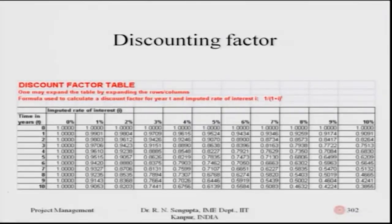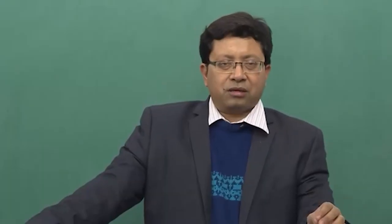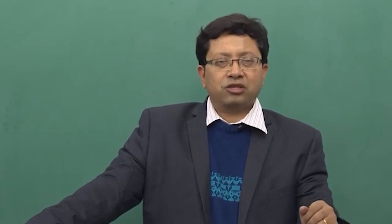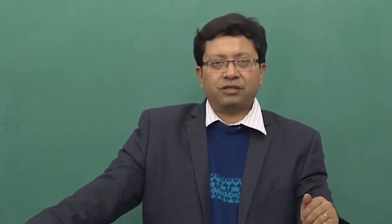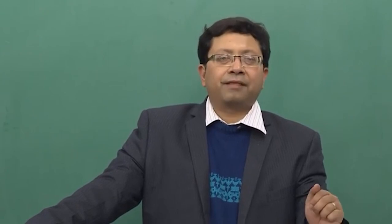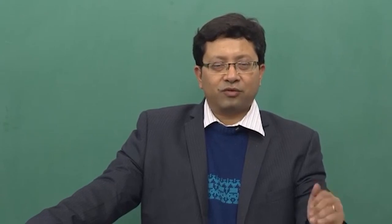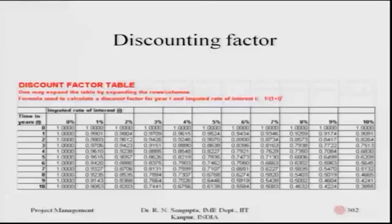I had discussed different types of financial concepts based on which you can evaluate a project. I will go into the details for that slowly so that the candidates doing this course can understand what are the implications. Let us go to the discounting factor concept. This table can be expanded for different interest rates, different time periods — for months, weeks, years — but I have taken this on a yearly basis, with time calculated as 0, 1, 2, 3, 4 and correspondingly interest rates of 0%, 1%, 2% and so on are on the top most row.